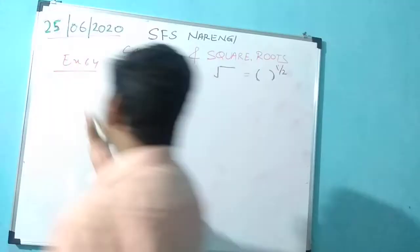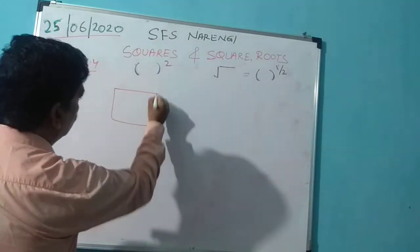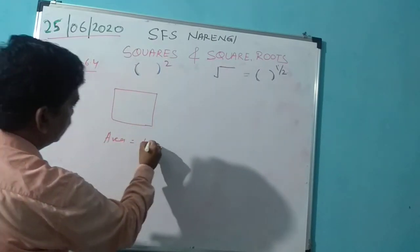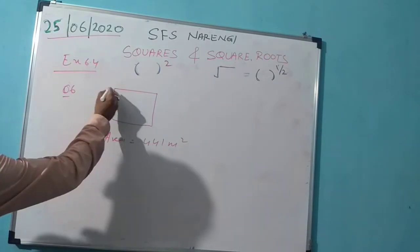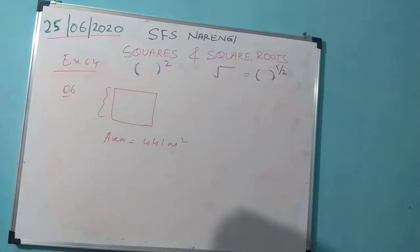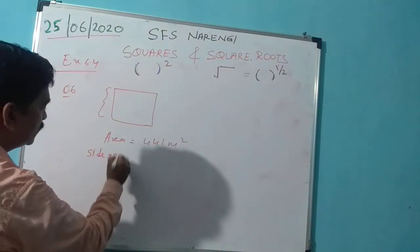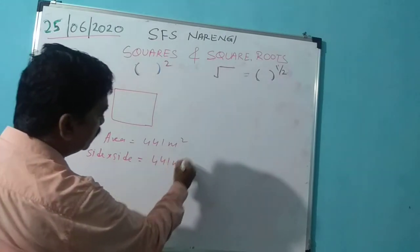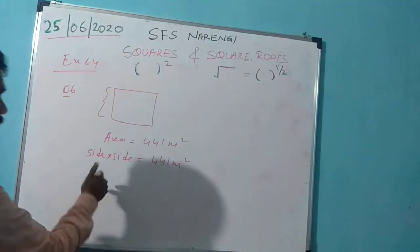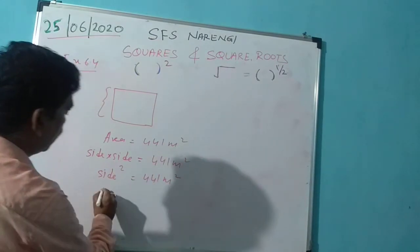Let's start with question number 6. You are given a square whose area is 441 square meters. We have to find the side of this square. We know the area of a square is side × side, so side² = 441 square meters.